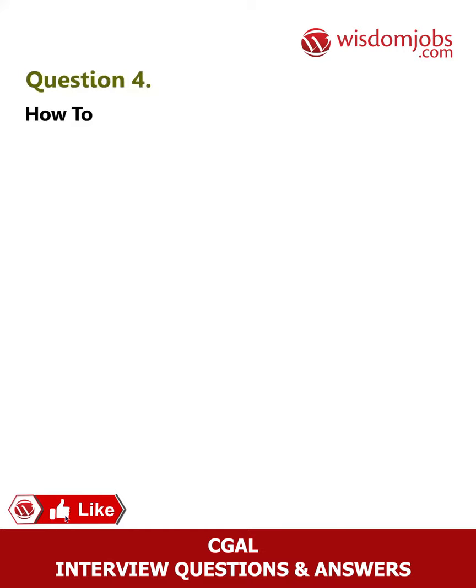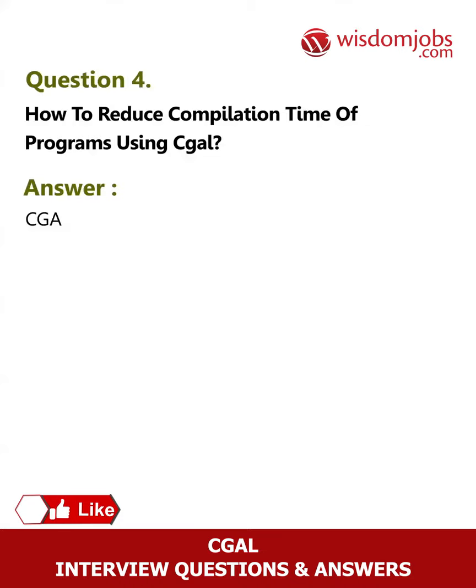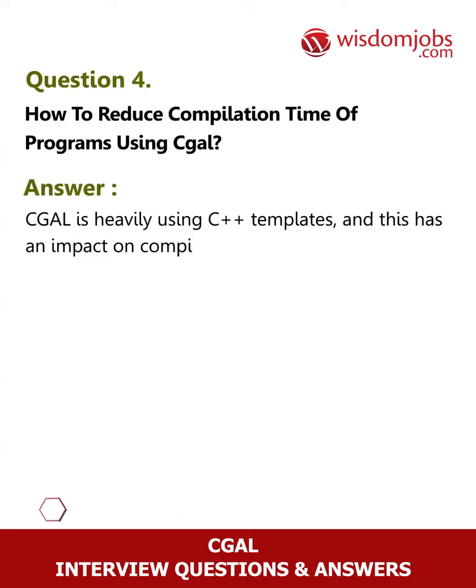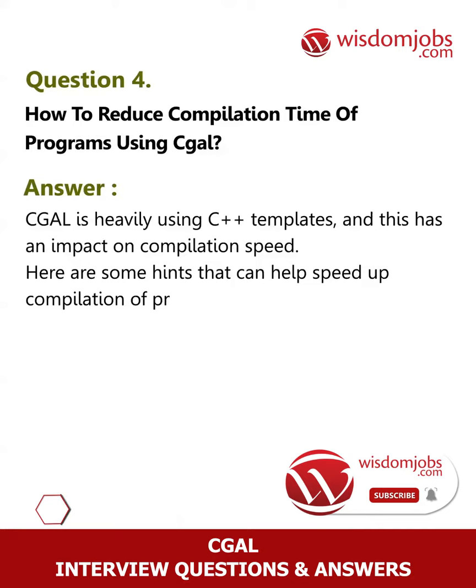Answer: CGAL is heavily using C++ templates and this has an impact on compilation speed. Here are some hints that can help speed up compilation of programs using CGAL: remove compiler debugging options like -g if you can, as generating debug information can be very costly for template instantiations.